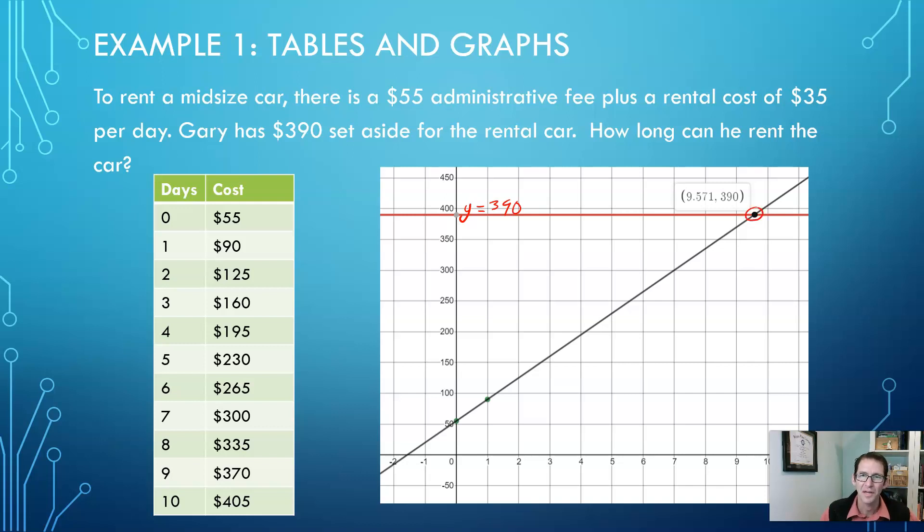And they intersect right here at this point 9.571 and 390. So this number here, the 390, that is our y value or in other words that's our money, and this x value 9.571, that's the days. So in this case he would get to keep it for about 9.6 days. And that's an example of how you can use a table and a graph.